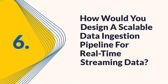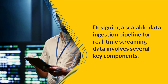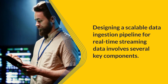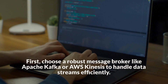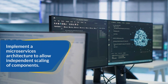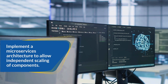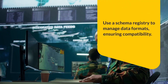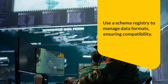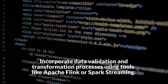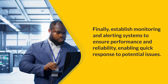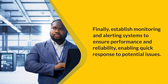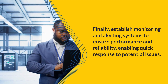Question 6: How would you design a scalable data ingestion pipeline for real-time streaming data? Designing a scalable data ingestion pipeline for real-time streaming data involves several key components. First, choose a robust message broker like Apache Kafka or AWS Kinesis to handle data streams efficiently. Implement a microservices architecture to allow independent scaling of components. Use a schema registry to manage data formats, ensuring compatibility. Incorporate data validation and transformation processes using tools like Apache Flink or Spark Streaming. Finally, establish monitoring and alerting systems to ensure performance and reliability, enabling quick response to potential issues.